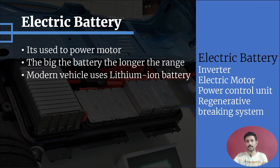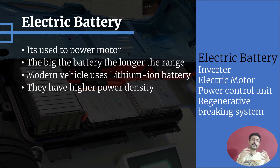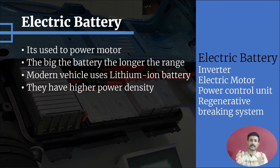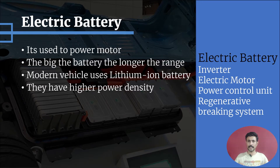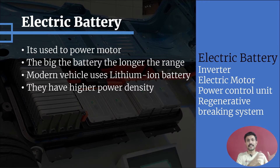Modern electrical vehicles use lithium-ion batteries. The main advantage of lithium-ion batteries is their higher power density. While they are slightly lower in power density compared to petrol and diesel, they are far ahead of lead-acid batteries. Thanks to these lithium-ion batteries, we now have electrical vehicles on the road.